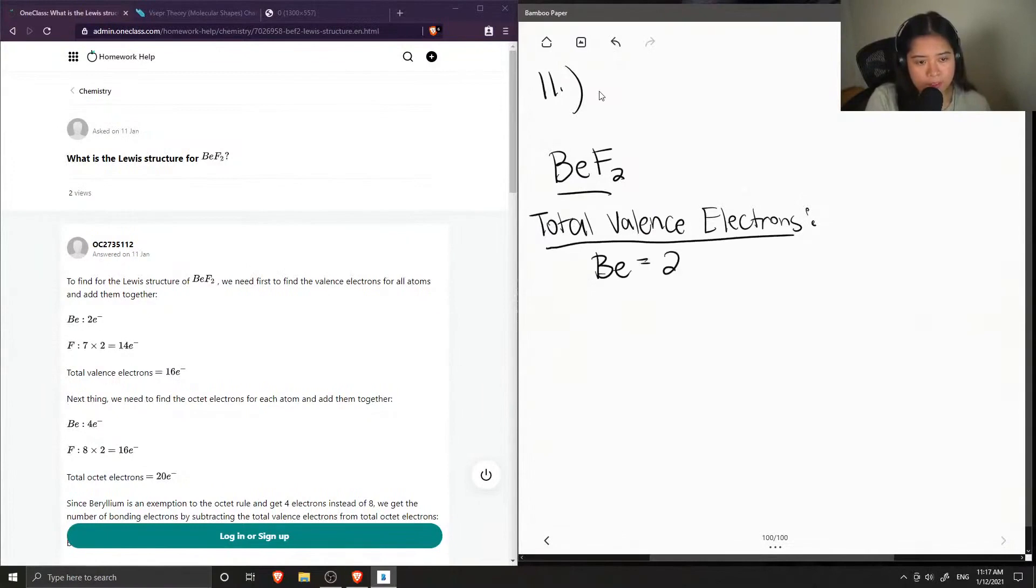Beryllium contains two valence electrons, and a fluorine atom contains seven. Since there are two of them, we multiply this by two, giving us a total of 16 valence electrons.